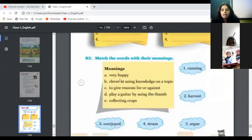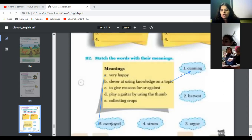Match the words with their meaning. Very happy, match with overjoyed. Fifth number. Clever at using knowledge on a topic, match it with cunning. First one. To give reason for or against, it will be matched with argue. Third one.